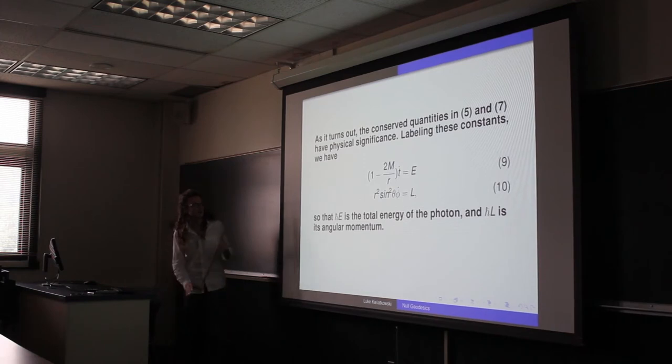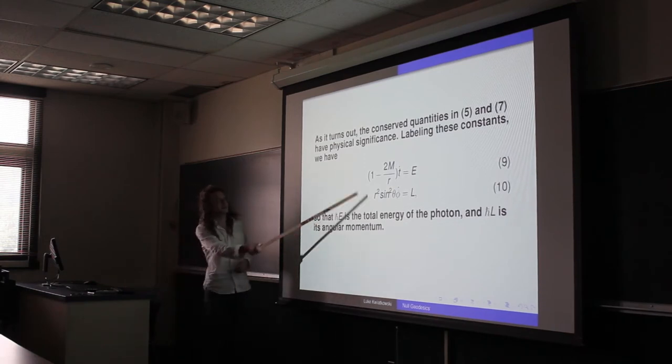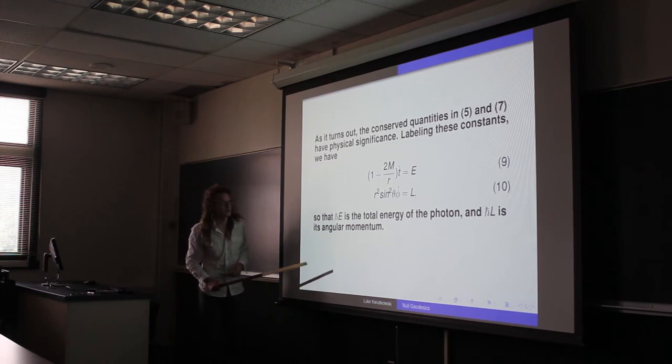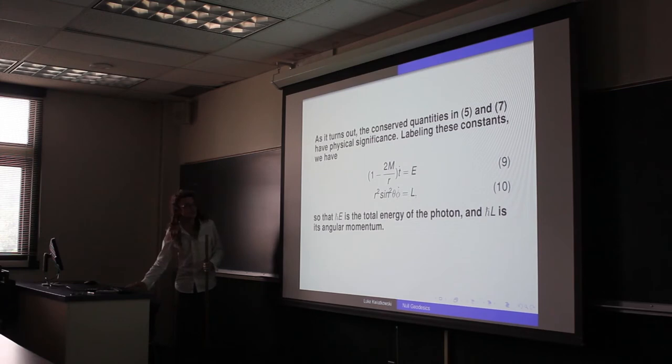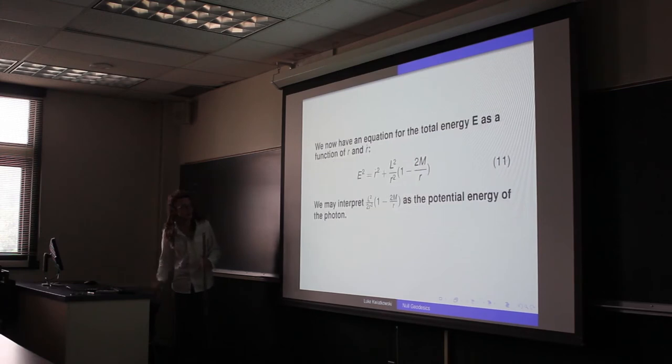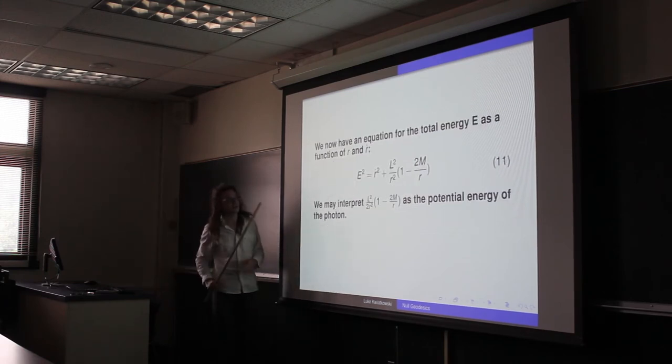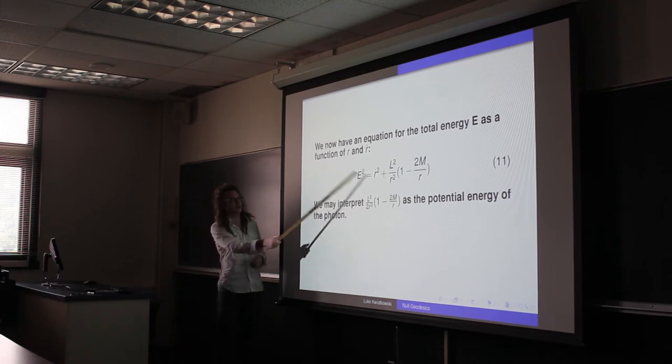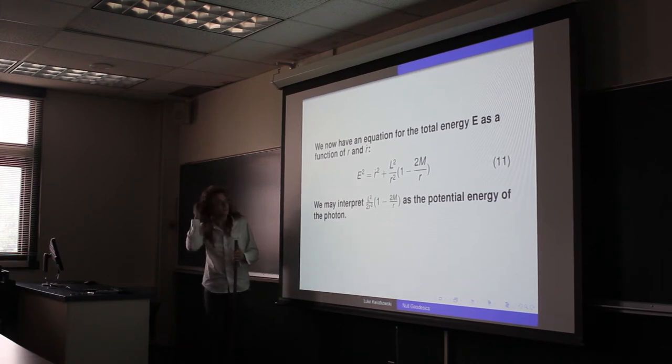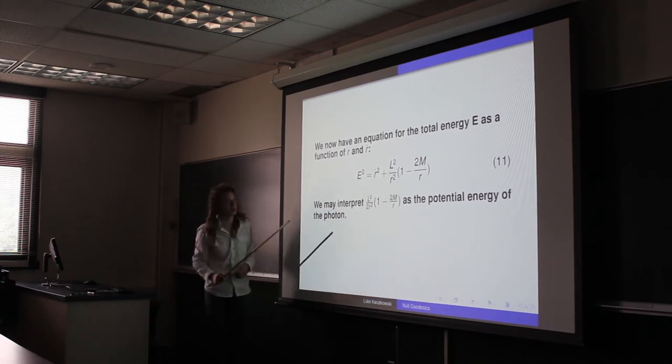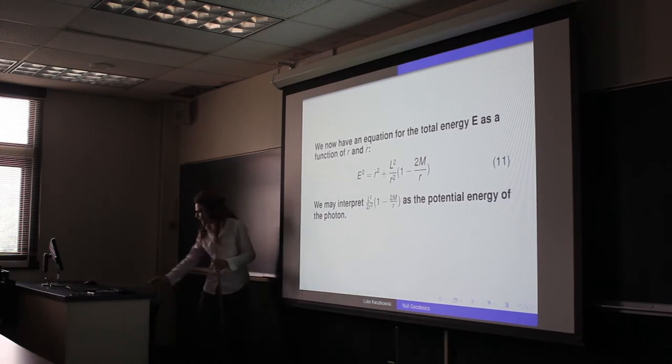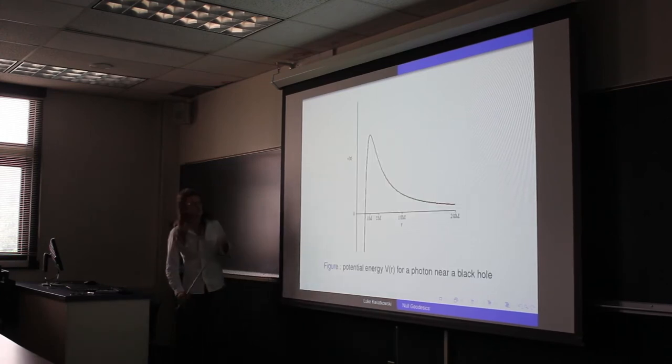So essentially we come up with expressions like these for the energy and the angular momentum of our photon. And we can relate different quantities also, such as the energy as a function of the radius and the rate of change of the radial coordinate. This term here actually gives us the potential of our photon. We can graph that.